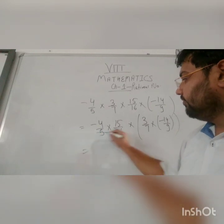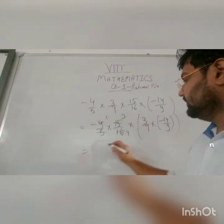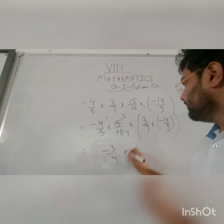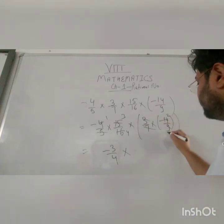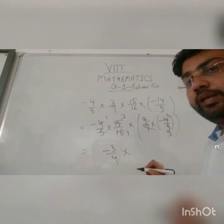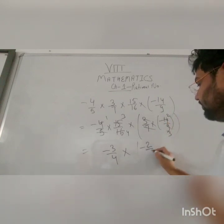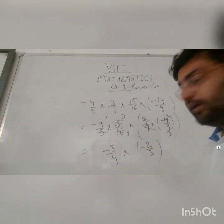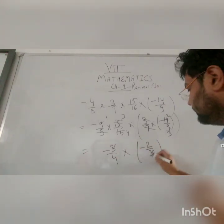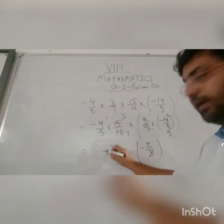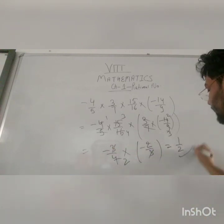Now simply solve it. 5 and 15: 15 by 5 is 3; 4 and 16: 16 by 4 is 4. This gives minus 3 by 4. Then 7 and 14: 14 by 7 is 2; 3 and 9: 9 by 3 is 3. So this becomes minus 2 by 3. Then 3 and 3 cancel, 2 and 2: minus times minus is plus. So this becomes 1 by 2.